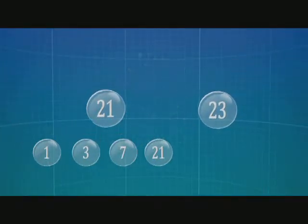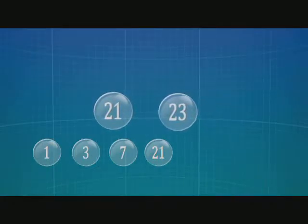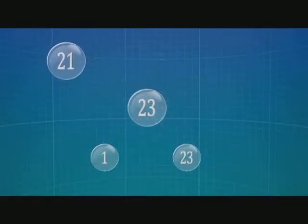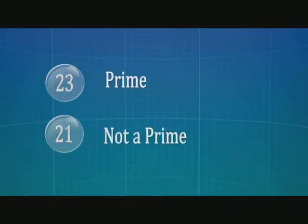But before we set off, let's quickly look at what a prime number is. Take the number 21. We can divide it by 1, 3, 7, and 21 without leaving a remainder. Now take 23. We can divide it only by 1 and 23. 23 is a prime. 21 is not.